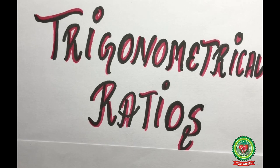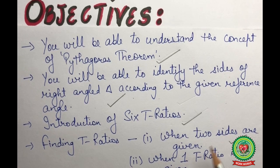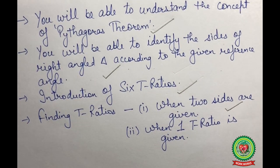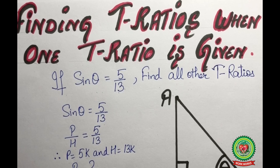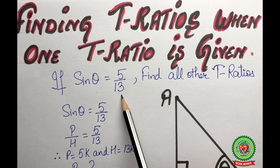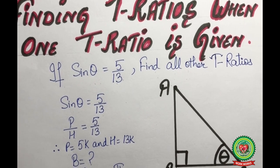Hello students, welcome back for another video on the topic trigonometrical ratios. In our previous video we discussed finding T-ratios when two sides are given. Now in this video we are going to discuss finding the T-ratio when one T-ratio is given to us. Let us discuss an example: if sine theta is equal to 5 upon 13, find all other T-ratios.